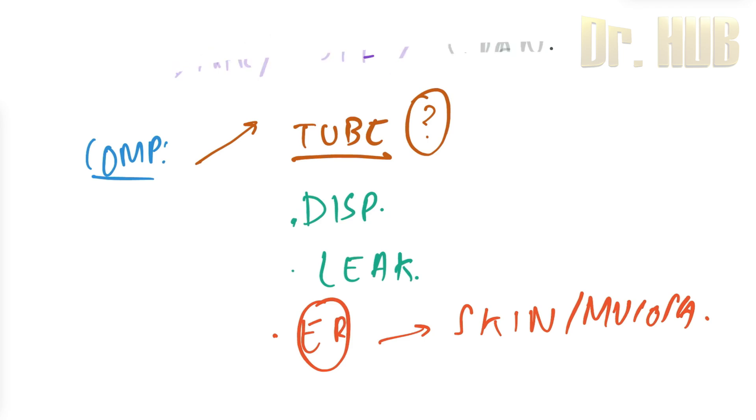Next we move on to gastrointestinal complications. The GI complication can include diarrhea, constipation, abdominal cramps, as well as aspiration.